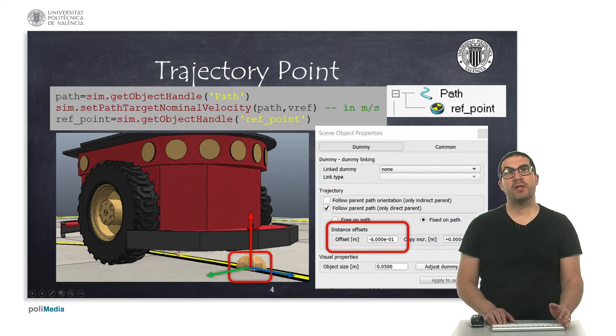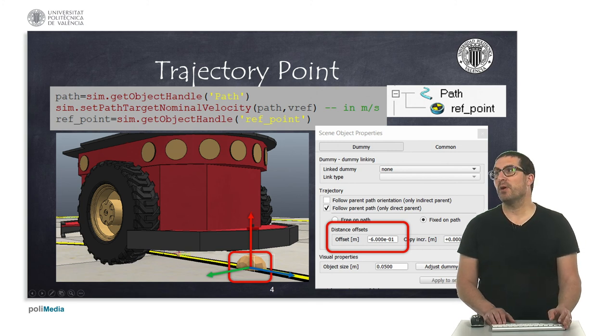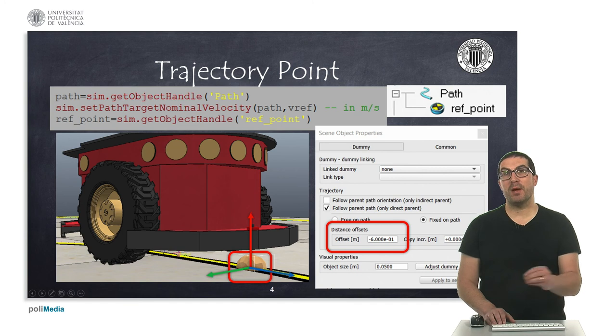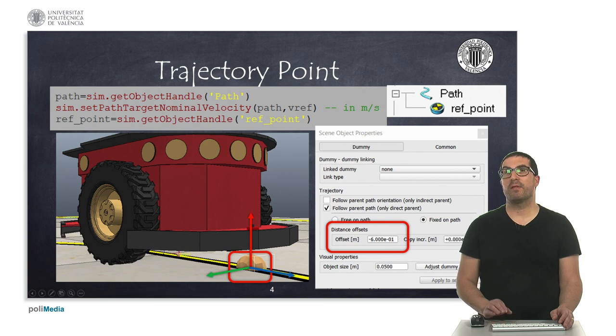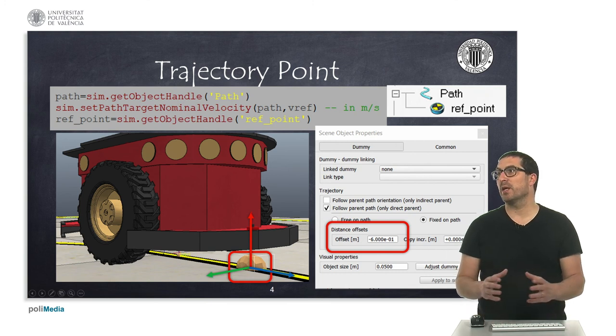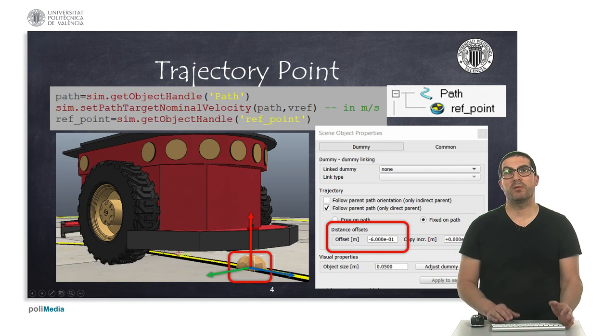In trajectory tracking problems, we have to track or follow a point. This point will be actually a dummy object that we need to add to our scene, and we need to make it child of the path, as you can see there. And check or make sure that you have the follow parent path property checked. And also, you can even increase the object size, so you can see it better bigger or bigger.